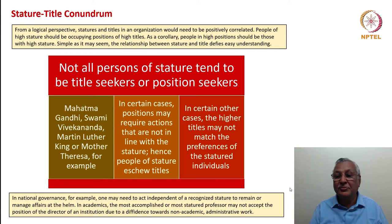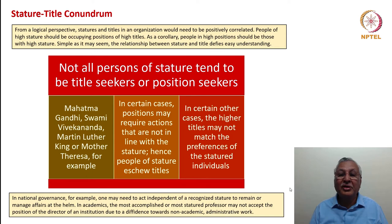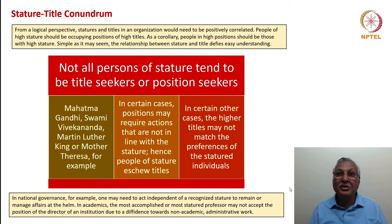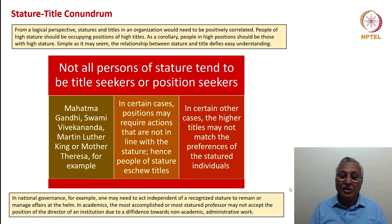Another reason: in certain cases, positions may require actions that are not in line with one's stature — hence people of stature eschew titles. In certain other cases, the higher titles may not match the preferences of the statured individual; an absolutely brilliant academician, even if given the title of dean or director, may find that the correlation between academic brilliance and the reflection that comes from the title does not hold. In academics, the most accomplished professor may not accept the position of director due to diffidence towards non-academic administrative work. The conundrum of stature-title match or mismatch arises basically from these four factors.